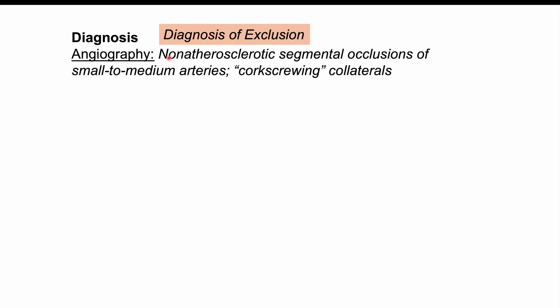How do clinicians diagnose Buerger's disease? This is a diagnosis of exclusion. Angiography is going to be the gold standard. The findings are going to be non-atherosclerotic segmental occlusions — not related to atherosclerosis, involving segments of the blood vessel affected by clots and inflammation. It involves occlusions of small to medium arteries, as large arteries are not affected. We can also see findings like corkscrewing collaterals.